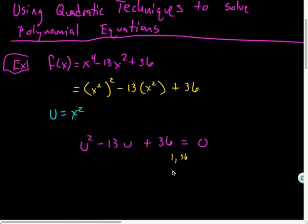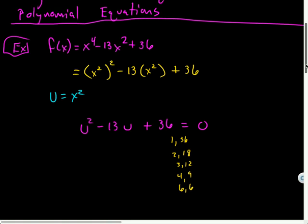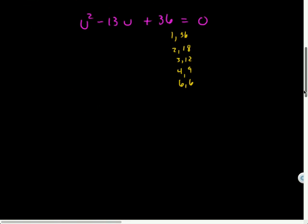So we'll have 1 and 36, 2 and 18, 3 and 12, 4 and 9, and 6 and 6. And notice I don't have to do a c method in this case, which is not the case for all of these kinds of problems, but at least for this one, simply because the leading term has a positive 1 coefficient. So I'm looking for the factors of c that add to be 13. Yep, right there.